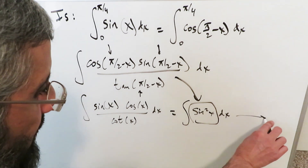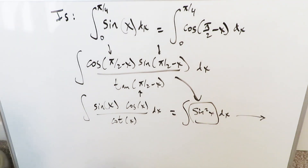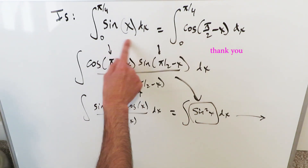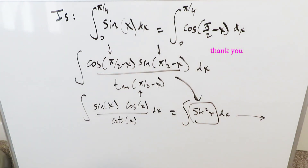So it's conceivable that a co-function identity can turn something complex into something less complex, which you can then integrate. That is the purpose of this video: showing that co-function identities can be substituted for, or replaced by, what they are equal to by means of trigonometric identities. Thank you, have a good day.